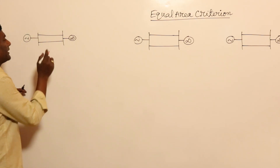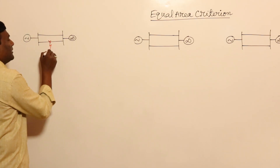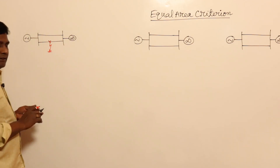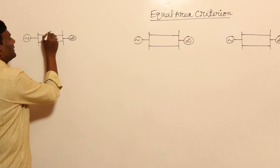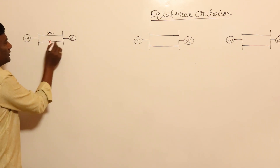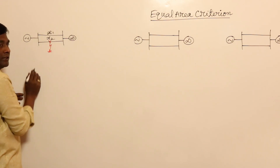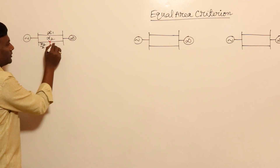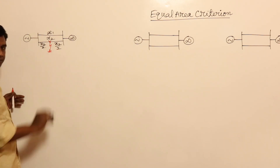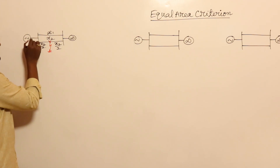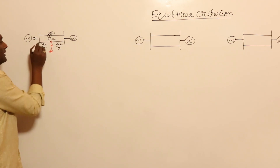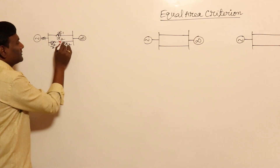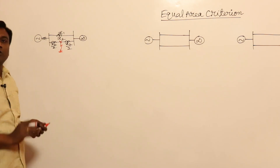In a double circuit line, if a fault occurs in the middle of the section, from here to here it is x1, and here to here this is x2. This means that this portion is going to be x2 by 2, and this portion is also going to be x2 by 2. So in this case, we have generator, generator reactance, and x2 by 2 as one reactance, x2 by 2 as another reactance, leading to the infinite bus.